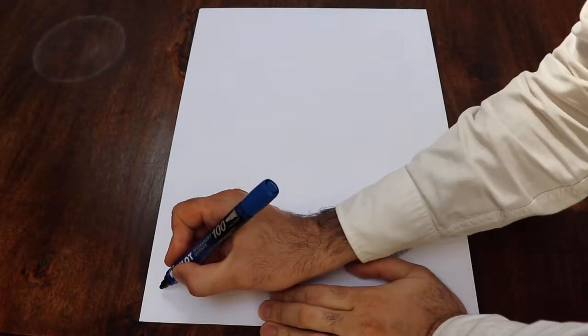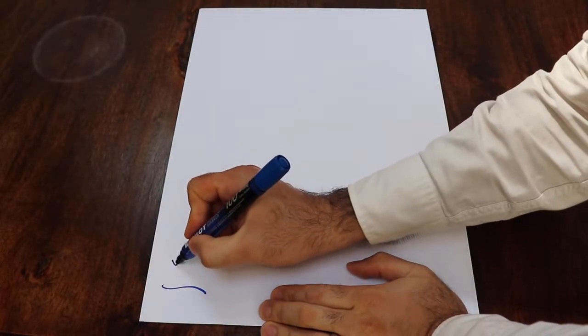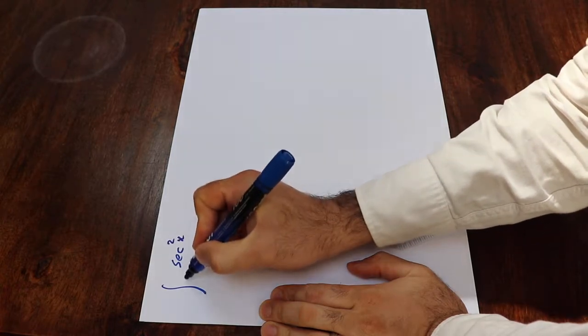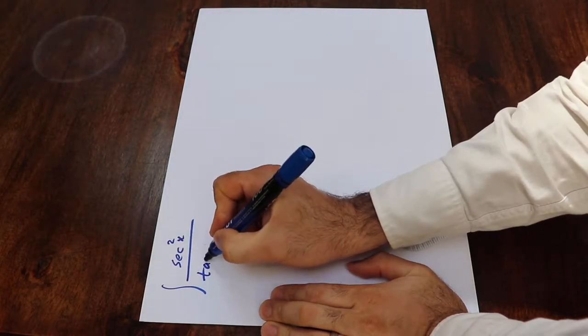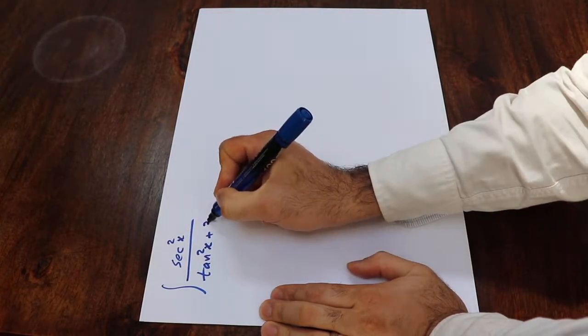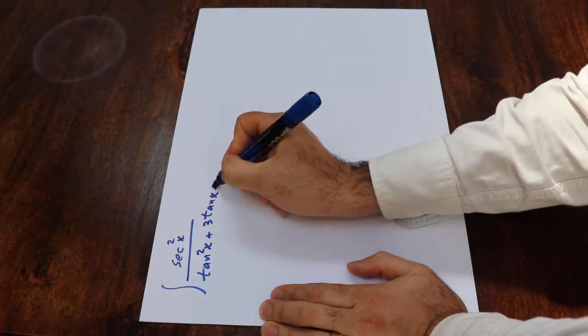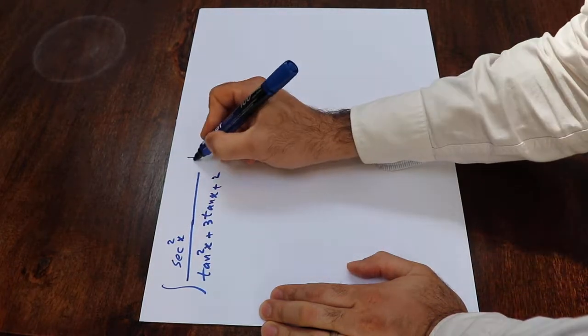Hello, today I'm going to show you how to calculate the integral of secant square x divided by tangent square x plus 3 tangent x plus 2 dx.